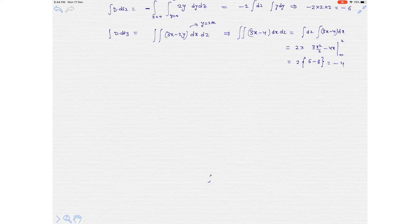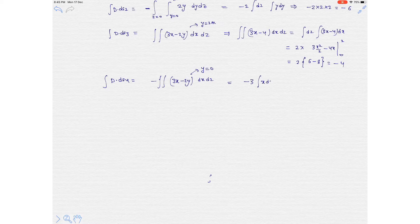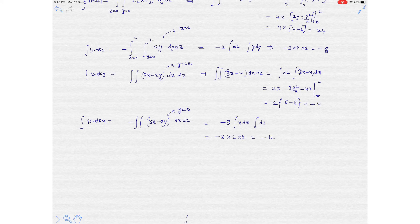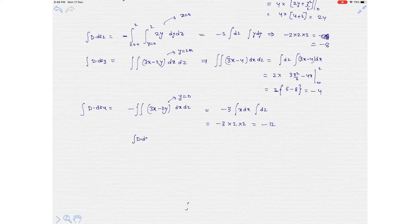Now for D·ds4 in the negative y direction, the integrand is (3x minus 2y) dx dz, but this surface is at y equals 0. So substituting gives minus 3x dx dz, which equals minus 3 times 2 times 2, giving minus 12. Note that D·ds2 equals minus 8, not minus 6 — sorry for the mistake. Summing all terms: 24 minus 8 minus 4 minus 12 equals 0.